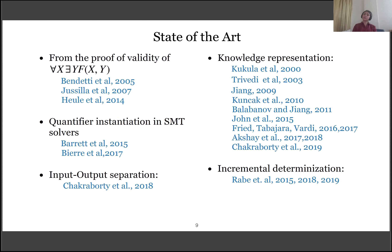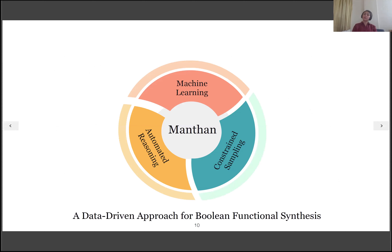Towards our goal of having a better and more efficient synthesis technique, we propose Manthan. Motivated by the success of machine learning, Manthan uses machine learning to come up with approximate candidate functions. Since machine learning needs data, Manthan does constraint sampling to generate the data. The candidates are then repaired using formal and automated reasoning. Hence, Manthan works at the intersection of machine learning, constraint sampling, and automated reasoning.